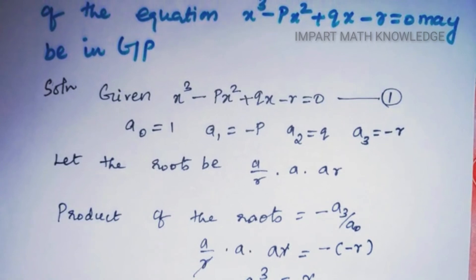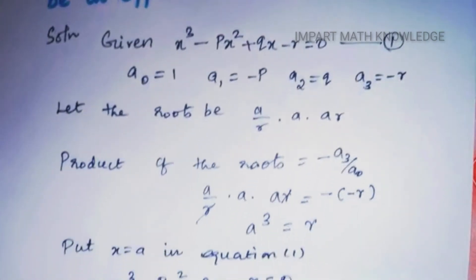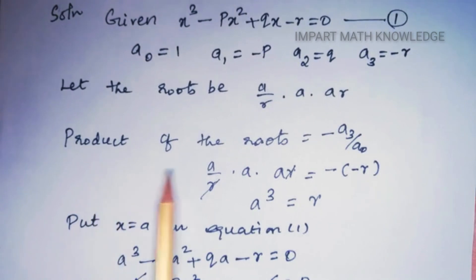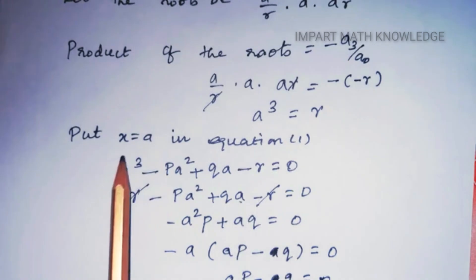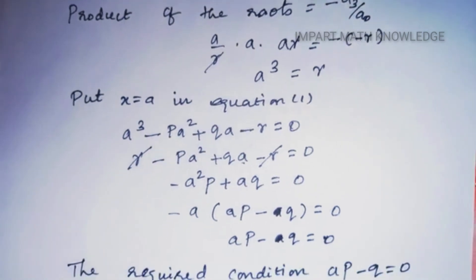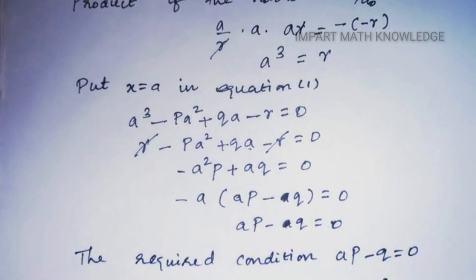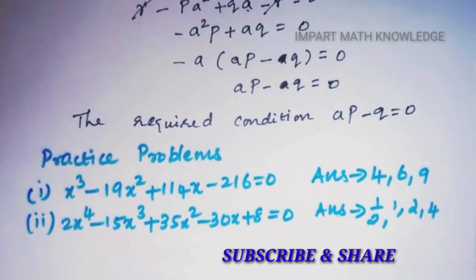To find the roots, write them in GP form, use the product of roots to find a³, then substitute x = a into the given equation to derive the condition. Practice these 3rd-degree and 4th-degree problems in the same manner. If you have any doubts, please comment below. Hope you all understand — thank you for watching. If you like this video, please subscribe and share.